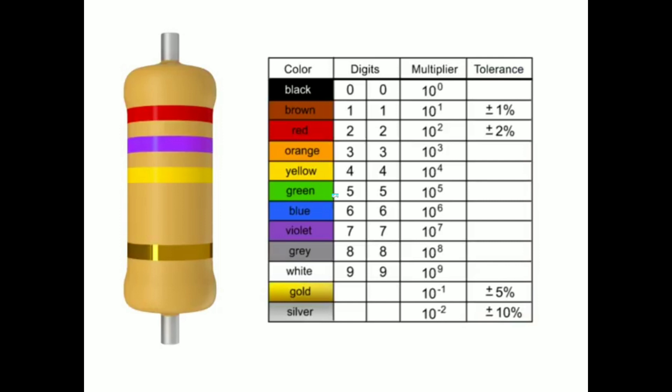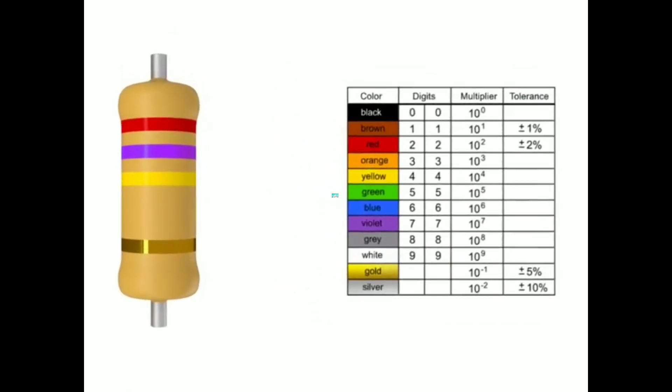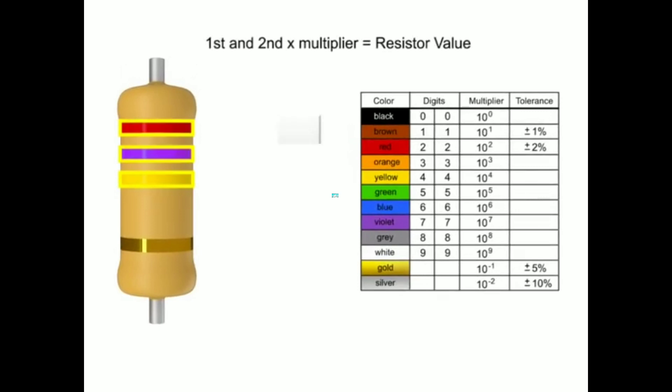You read resistor bands beginning with the end that has the most bands. A space between the third and fourth bands also indicates the reading direction.